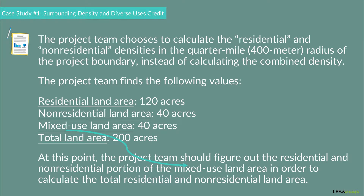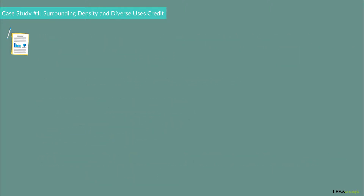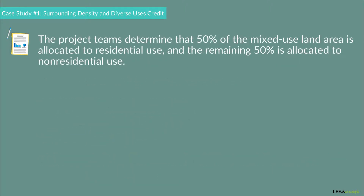At this point, the project team should figure out the residential and non-residential portion of the mixed-use land area in order to calculate the total residential and non-residential land area. The project team determines that 50% of the mixed-use land area is allocated to residential use, and the remaining 50% is allocated to non-residential use. With this information, the project team calculates the land area for both portions within the mixed-use.